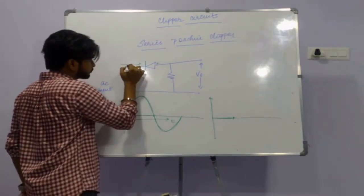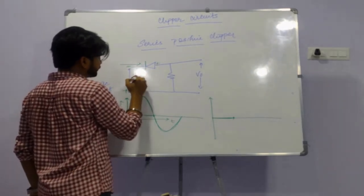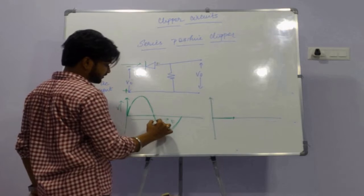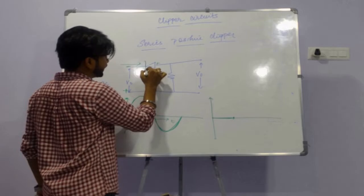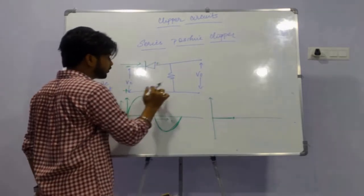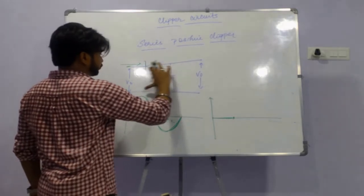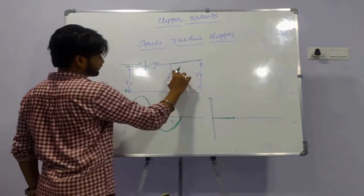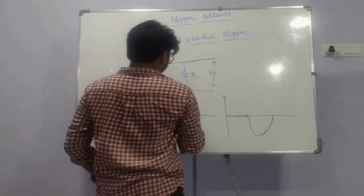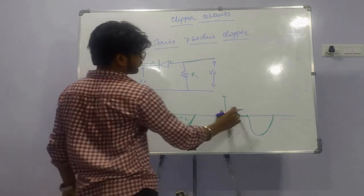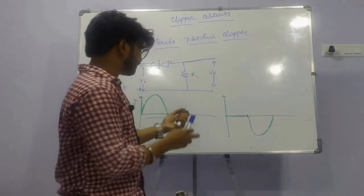In the second half, the voltage becomes negative here and positive here. The negative half of the AC voltage is connected to the negative of the P-N junction, so it becomes forward biased. This entire voltage is passed through the resistance R. Therefore, the positive AC signal is clipped away and the negative half is present as it is.